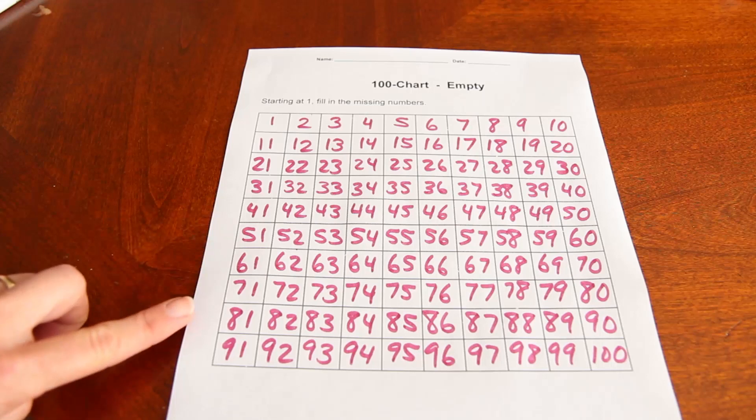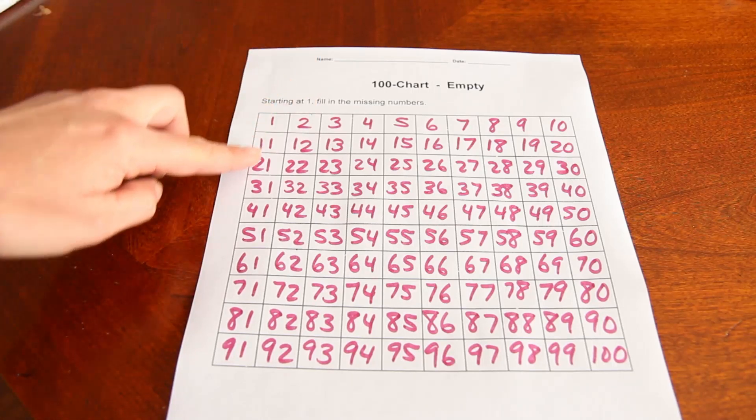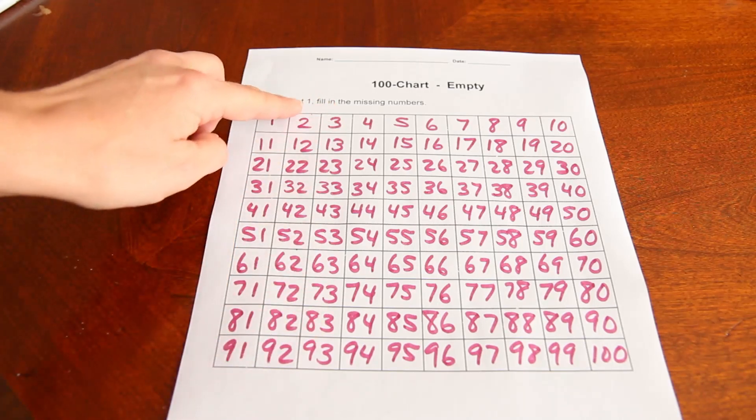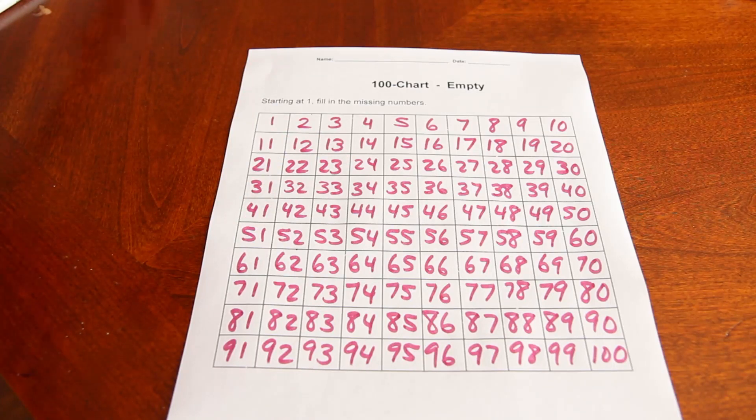Now that they've filled out the chart, you can talk to them about odd numbers and even numbers. How all the odd numbers follow the columns. And all the even numbers also follow each column. And you can color them in if you like.